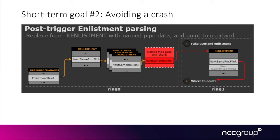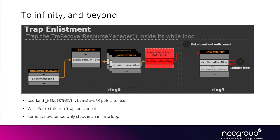The loop is still processing our fake userland k_enlistment and will try to fetch the fling pointer and keep going, because it's bounded by pointing at the enlistment head which will never happen since the loop is stuck in userland. We need a way to control the loop: the trick is to make the fling pointer inside the userland enlistment point to itself, causing the kernel thread to infinite loop — but in a way we fully control. We can break it out later by changing the next_same_rm_fling pointer from userland.